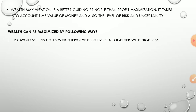First, by avoiding projects which involve high profits together with high risk. If you are using profit maximization, you would accept a project that gives higher profit. But using wealth maximization, you avoid projects involving high profit along with high risk, since high profit is always associated with high risk. If the outcome is 50-50 — either loss or profit — that is not confirmed. There should be a confirmed minimum amount of profit to be earned from the investment.